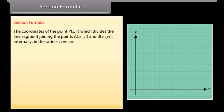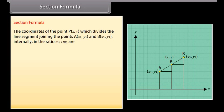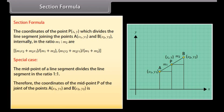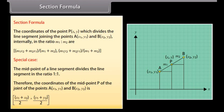Section formula: The coordinates of the point P(X, Y) which divides the line segment joining the points A(X1, Y1) and B(X2, Y2) internally in the ratio M1 to M2 are: ((M1·X2 plus M2·X1) divided by (M1 plus M2), (M1·Y2 plus M2·Y1) divided by (M1 plus M2)). A graphical representation is shown in the figure. Special case: the midpoint of a line segment divides it in the ratio 1 to 1. Therefore the coordinates of the midpoint of A(X1, Y1) and B(X2, Y2) are ((X1 plus X2) divided by 2, (Y1 plus Y2) divided by 2).